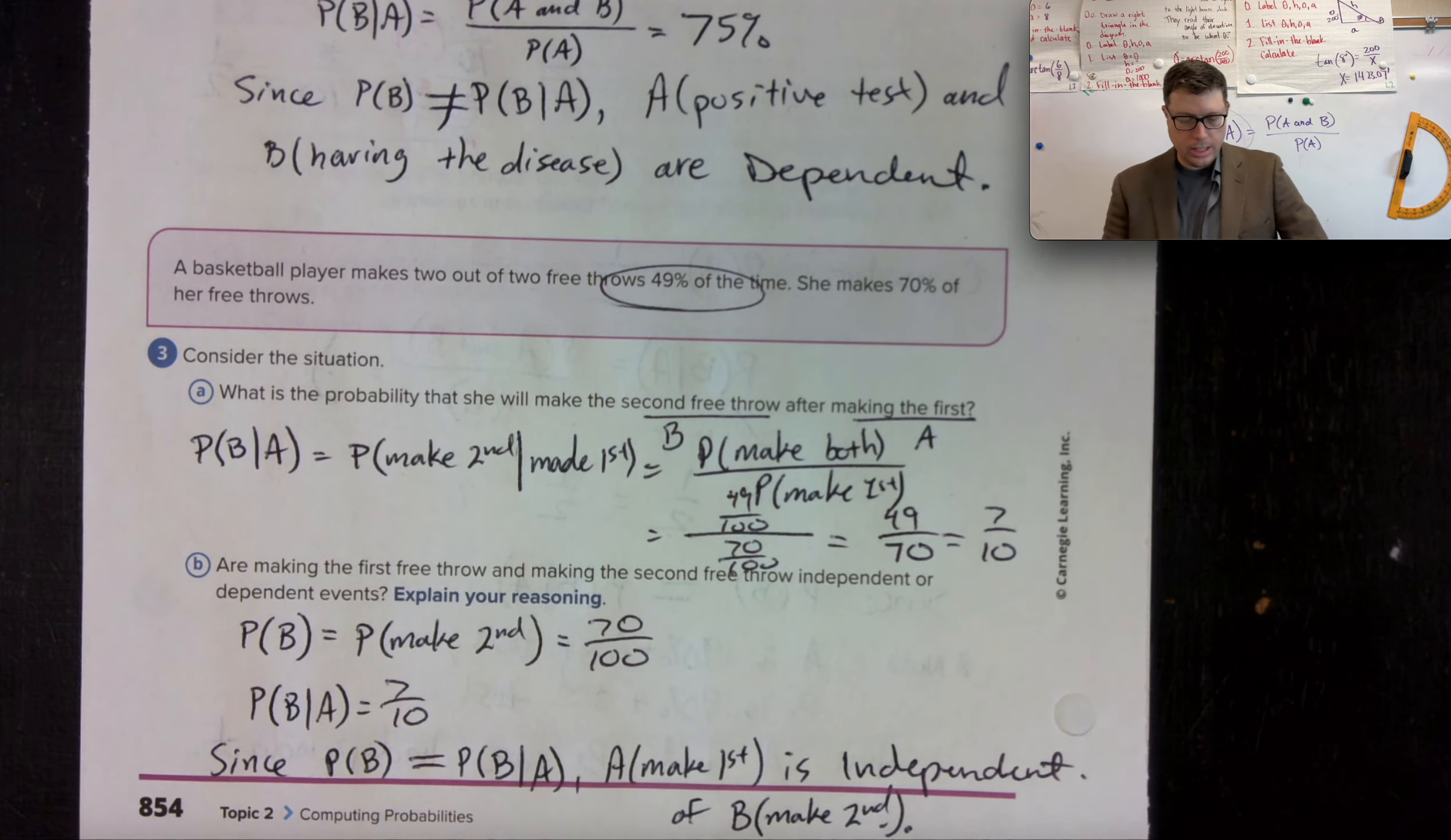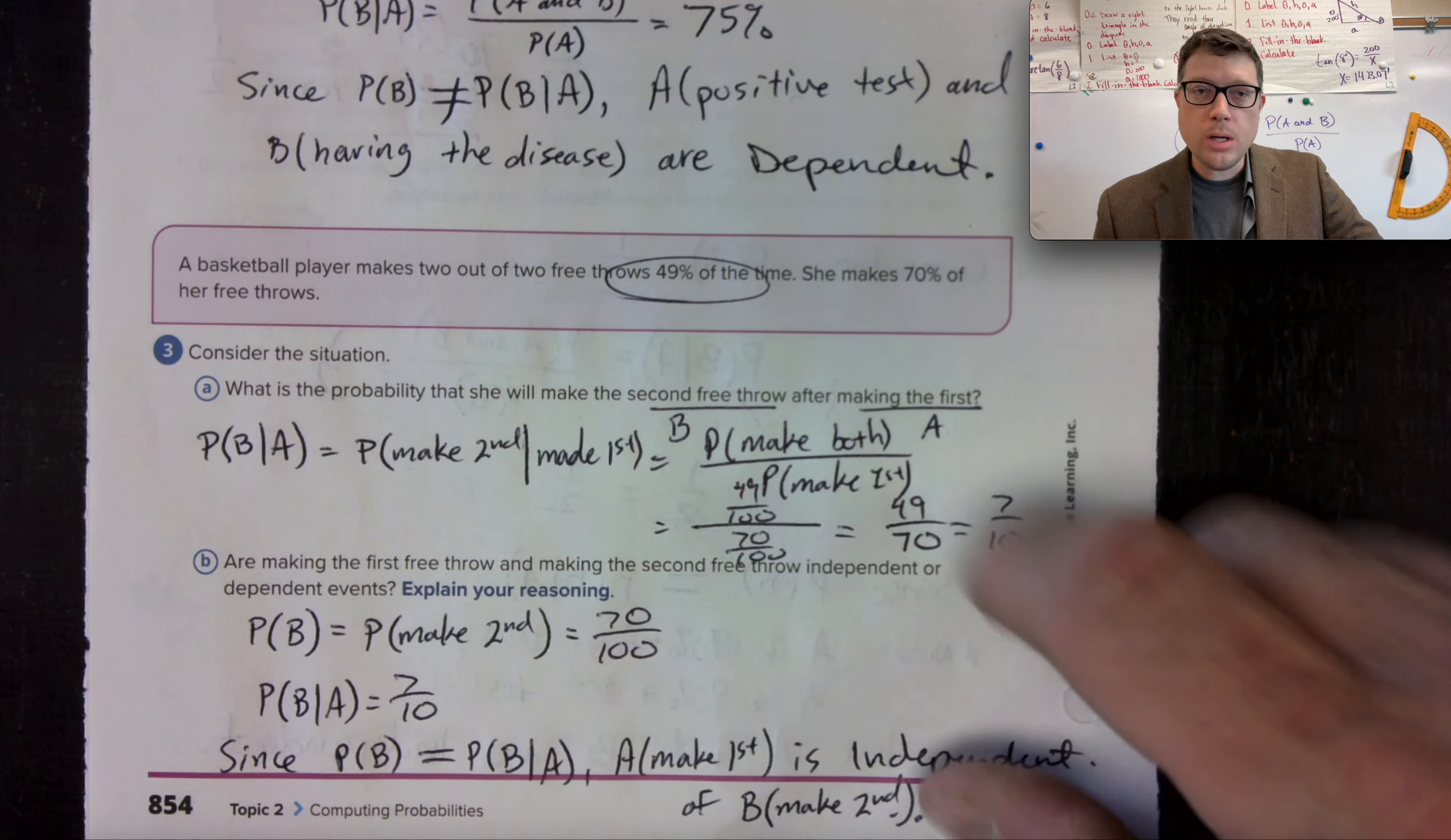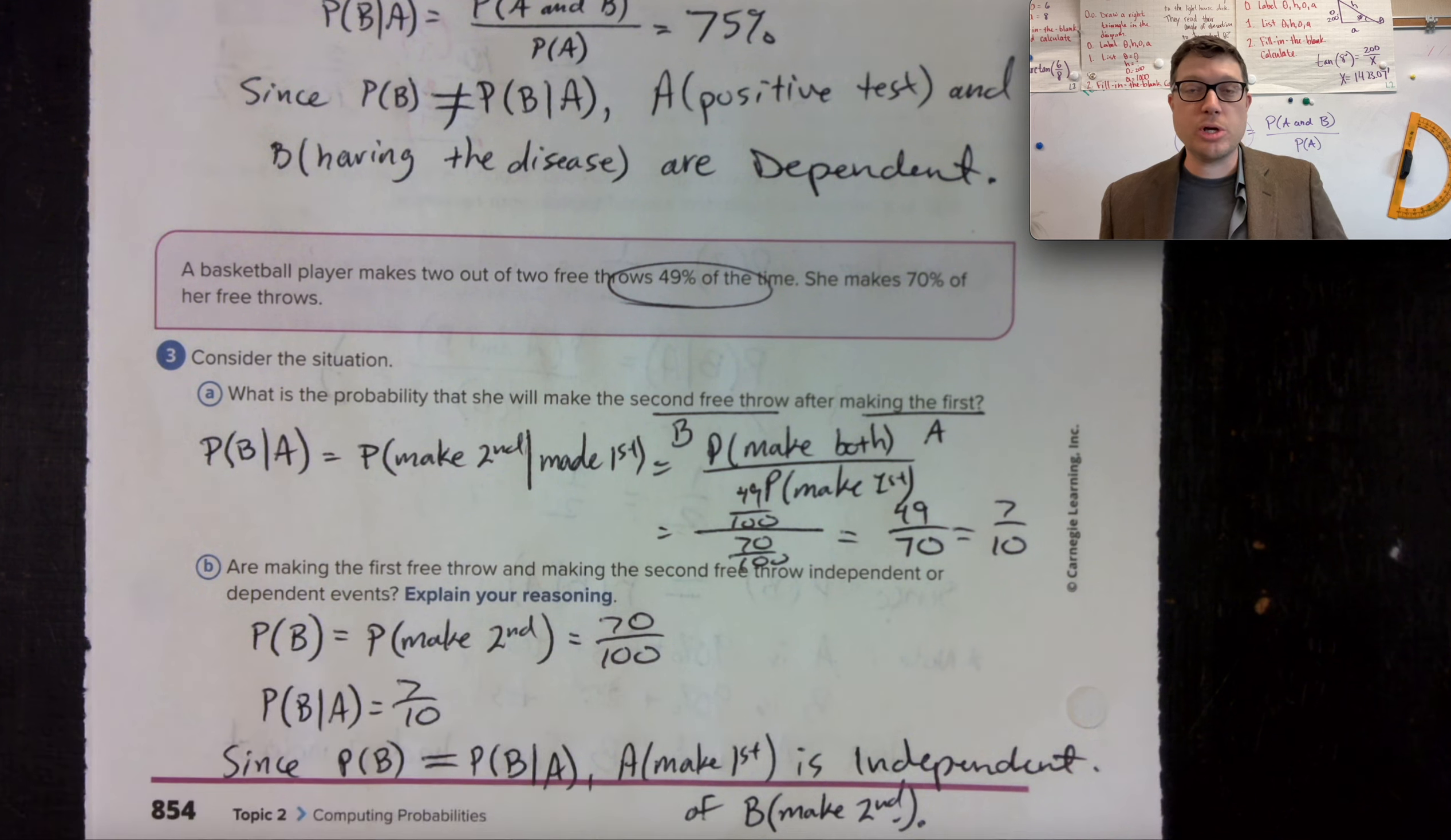Yo, this one was cheeky. I got stuck on the 49 over 70 and thought there's no way that reduces. 49 is seven squared and 70 is seven times 10, so we can reduce them both by seven to get seven over 10, which is the same as her making percentage of free throws, generally 70% of the time. Because the probability of making the second is 70% and the probability of making the second given she made the first is also 70%, those two events are independent.